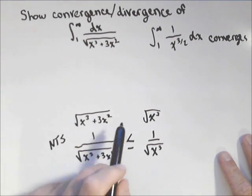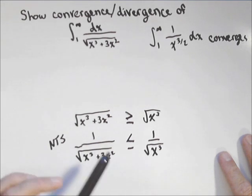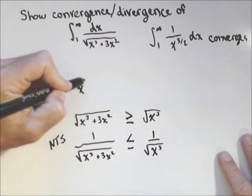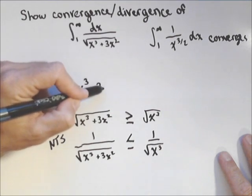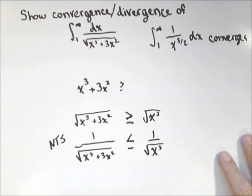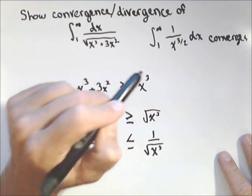This seems to be true, but we can actually make it even more obvious. Let's square both sides. So, x cubed plus three x squared. Remember that we're only dealing from one to infinity, so only positive inputs, is greater than or equal to x cubed.